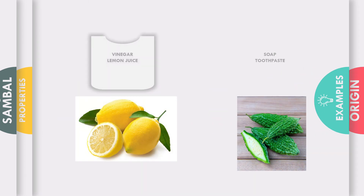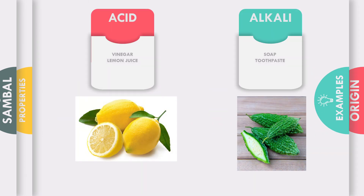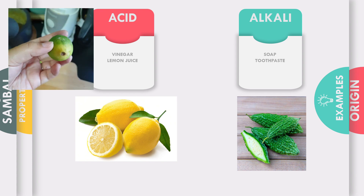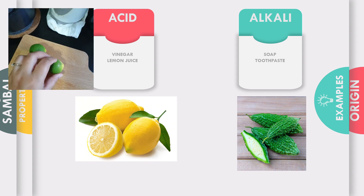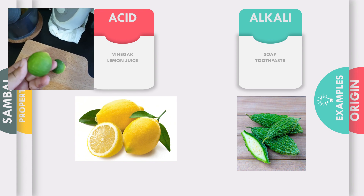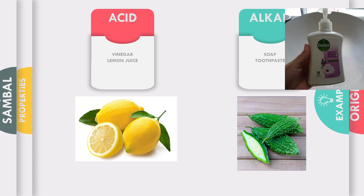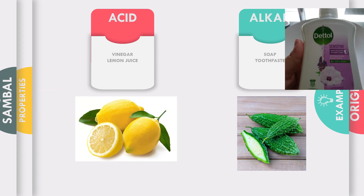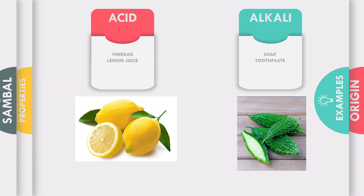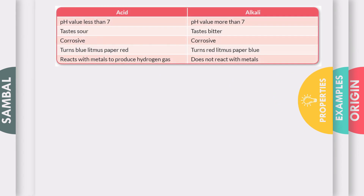There are lots of examples of acids and alkali around us. If you look in your house, there might be vinegar and lemon juice, and those are acids. Meanwhile, soap and toothpaste are examples of alkali.